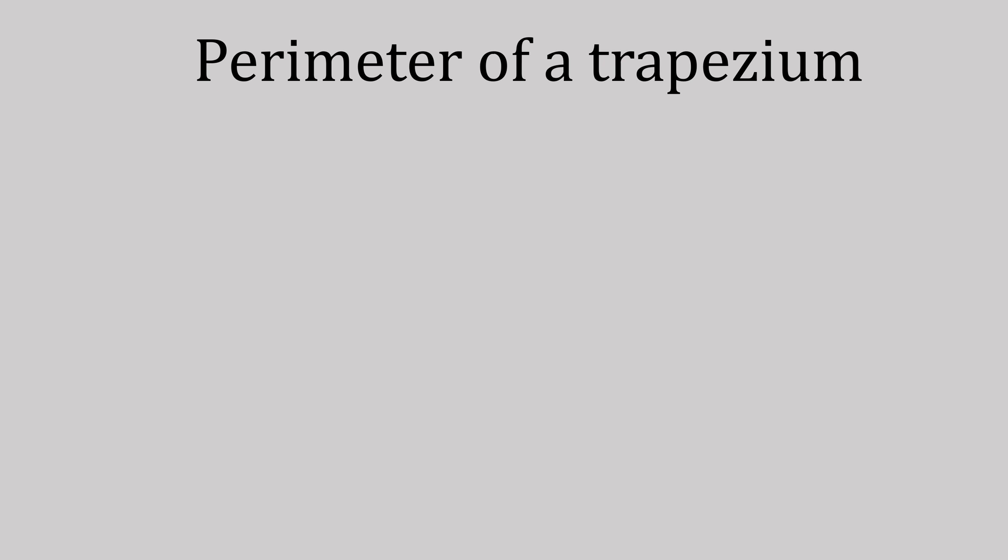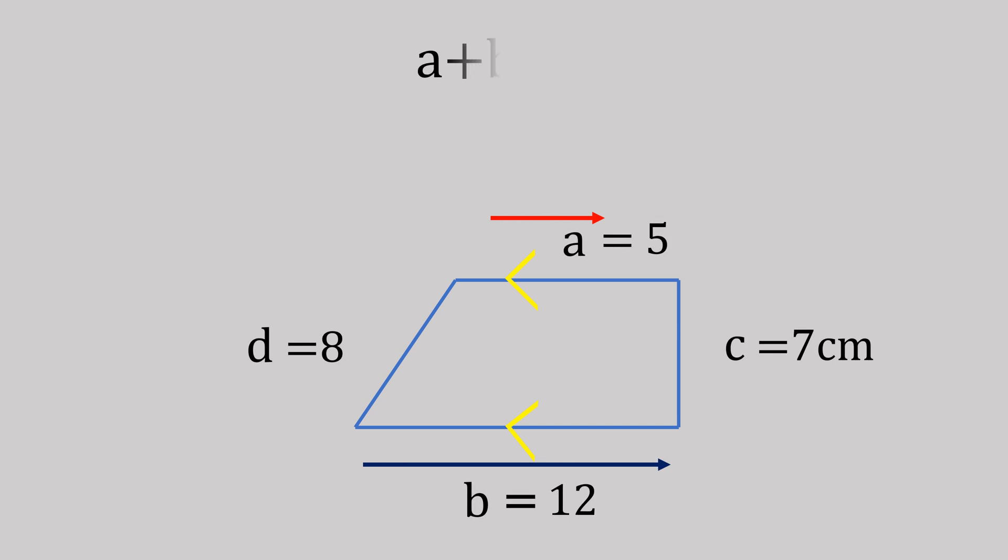For the perimeter of a trapezium, this is the line outside of the shape, like a fence. Let's put on our measurements and add them all up. So this will be a plus b plus c plus d, which gives us 5 plus 12 plus 7 plus 8, for a total of 32 centimeters.